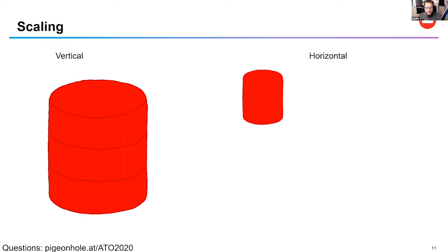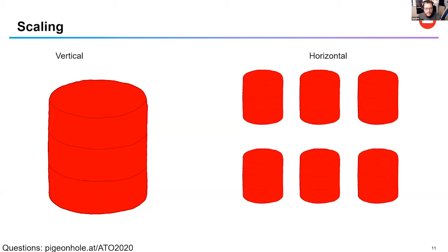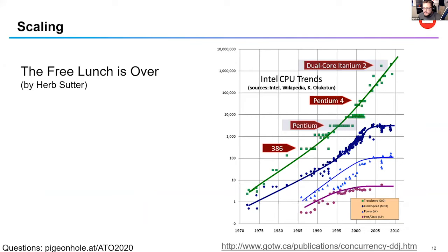The reason vertical scaling doesn't always solve the problem is related to the paper 'The Free Lunch Is Over,' which says Moore's Law is plateauing. Therefore, the solution is not more transistors but parallel computing — more cores, multi-threading, distributed computing, and distributed databases. That's why horizontal scaling might help solve your problem.